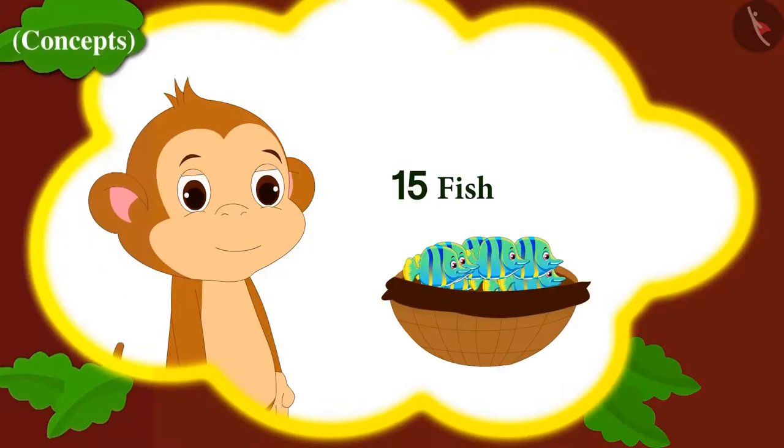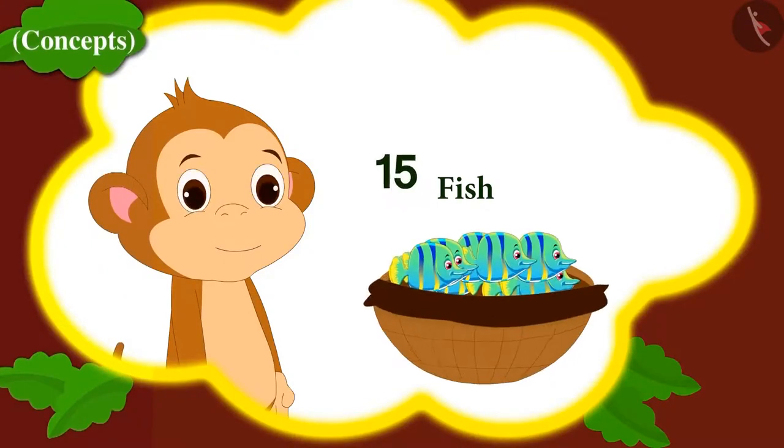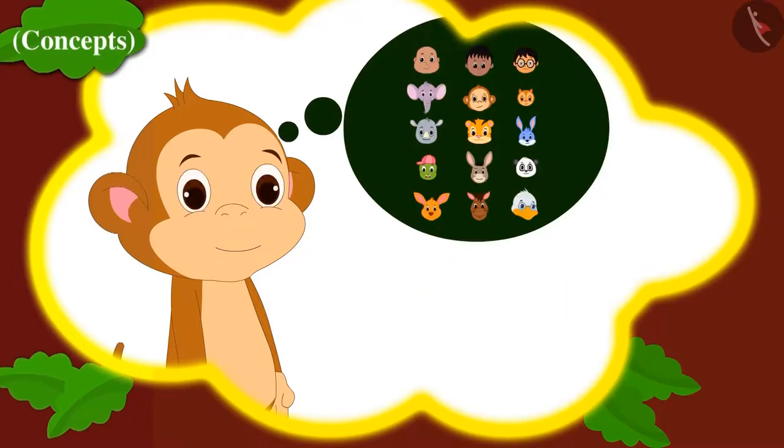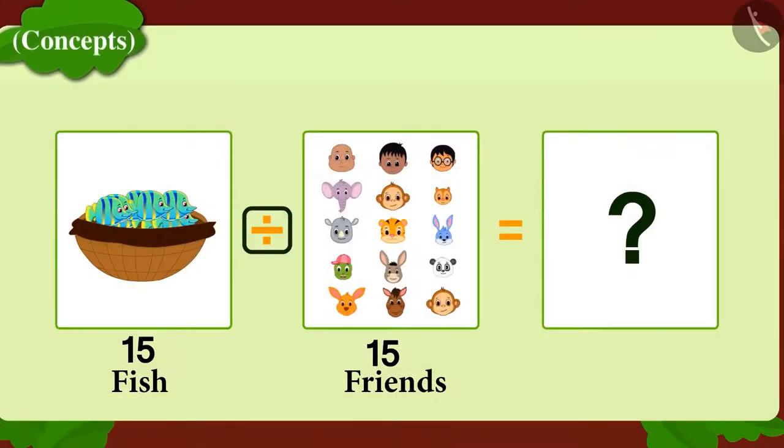All the people have reached the river bank for fishing. Babban caught 15 fish. He is thinking that he would like to divide the fish equally among 15 of his friends. To find out how many fish he will have to give to each friend, he quickly wrote down this division on a piece of paper.